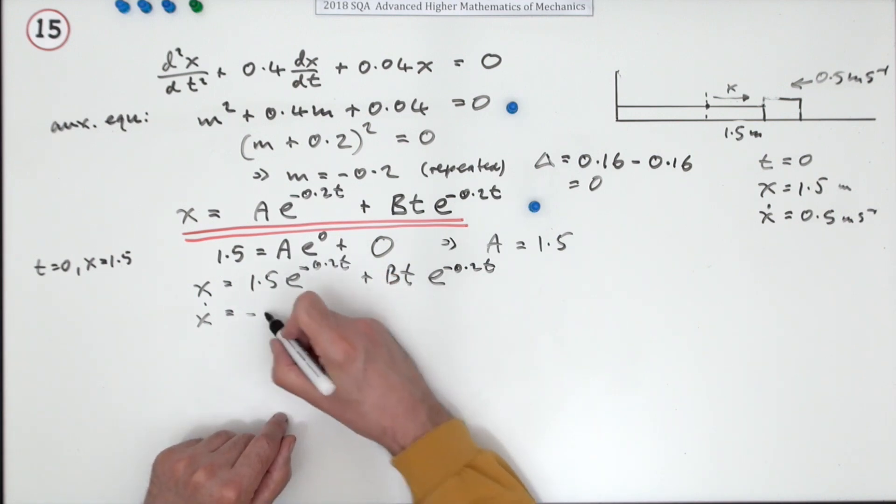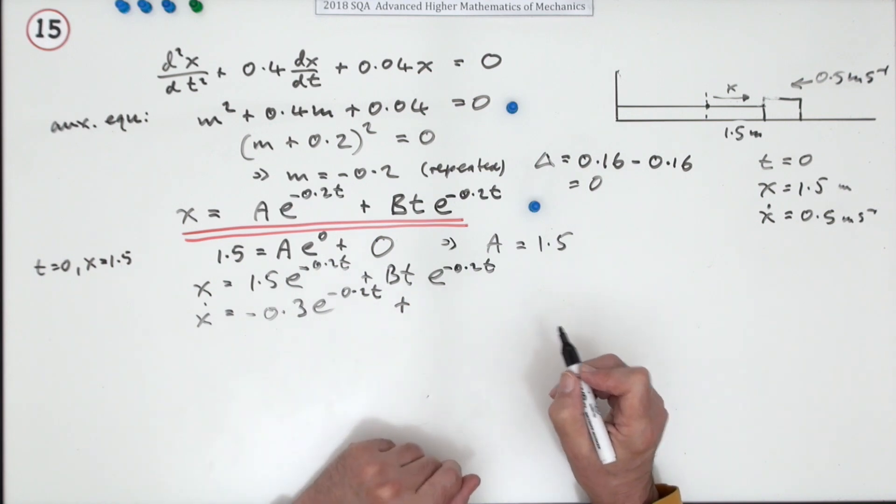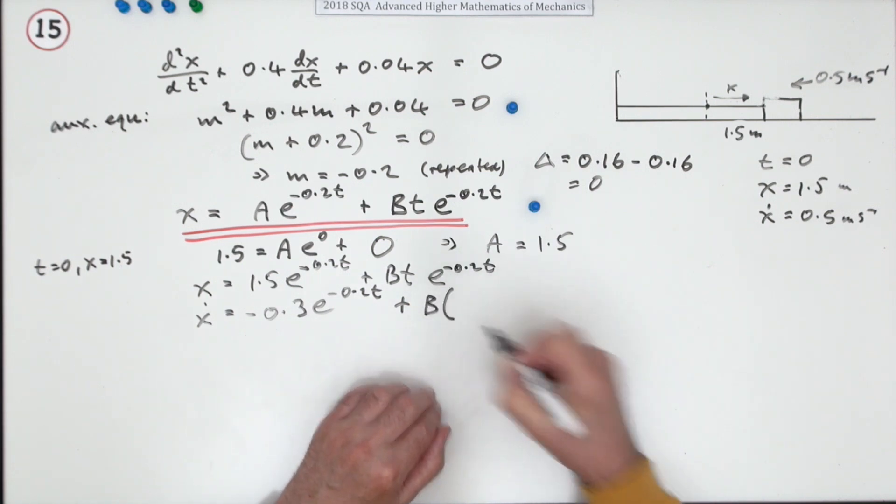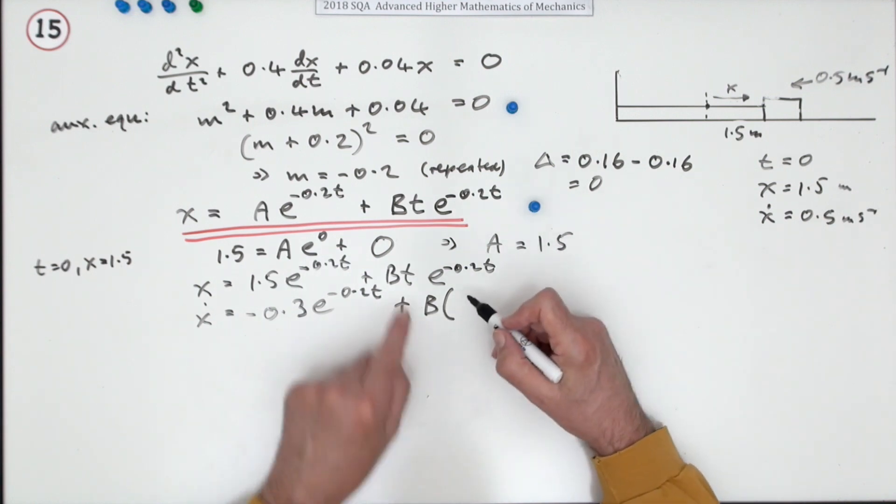Two of them would be 3, but it's 0.2, so it's 0.3e to the negative 0.2t, plus now there's a product. I think I'll just take the B out of that product so I've only got it written down once.